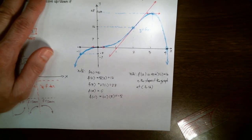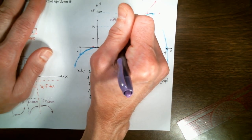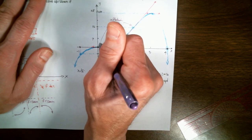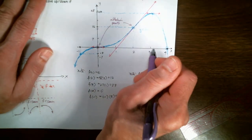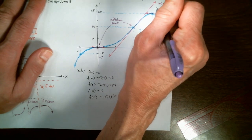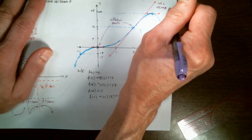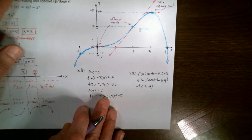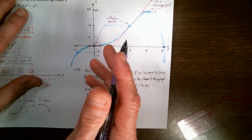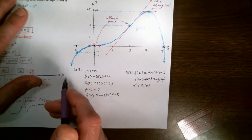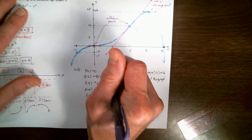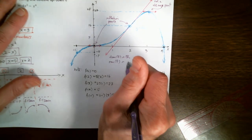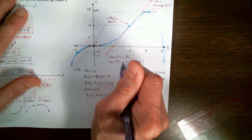We had two inflection points: (0, 0) and (2, 16). The point (3, 27) is both the relative and absolute maximum point on the graph. There are no relative or absolute minimum points. The domain of f is all real numbers, and the range extends from -∞ up to and including 27.